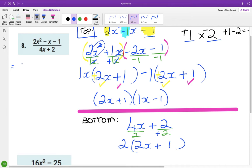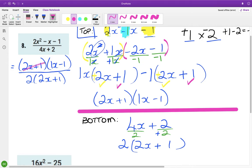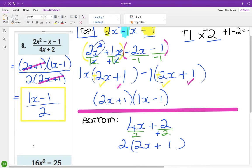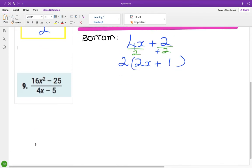Alright, so let's go back in here. The top line is now 2x plus 1, 1x minus 1. And the bottom line is 2 times 2x plus 1. Does anything cancel? It does, the 2x plus 1's cancel. And that leaves me with 1x minus 1 over 2. I'll just highlight the answer there. Alright, we keep going.